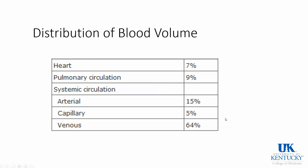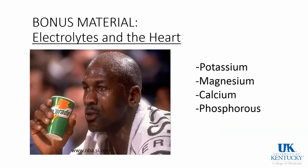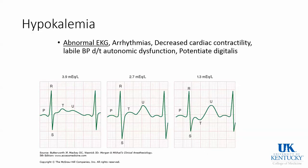That covers the overall anatomy, circulation, and conduction of the heart. Now let's review a few electrolytes. With hypokalemia, patients will have an abnormal EKG due to delayed ventricular repolarization. You get a flat or inverted T wave, classically a U wave — the mnemonic is 'you need more potassium' — along with ST depression, increased P wave amplitude, prolonged PR interval, and arrhythmias. You can also have decreased cardiac contractility, labile blood pressure, and potentiation of digitalis.